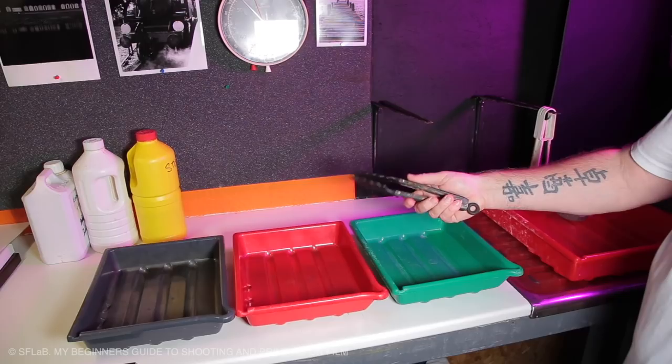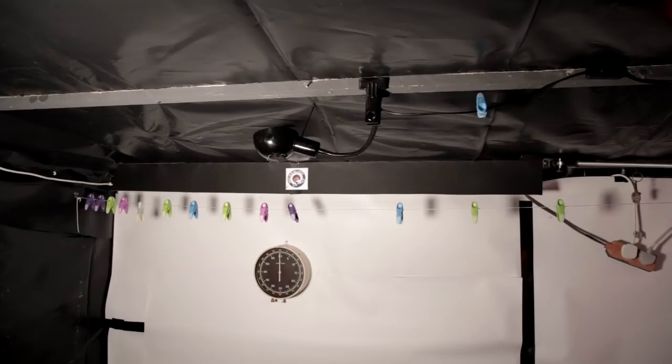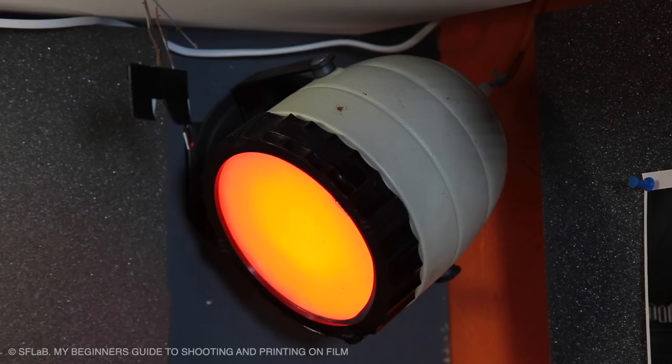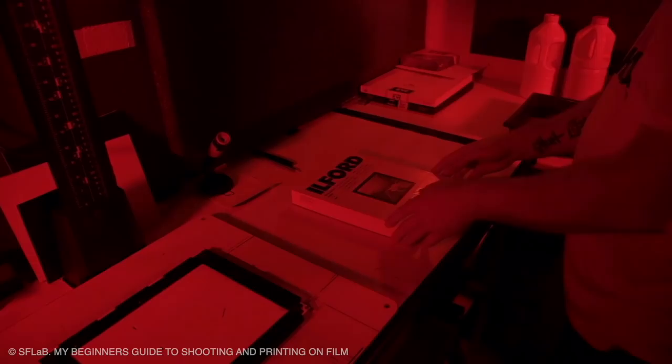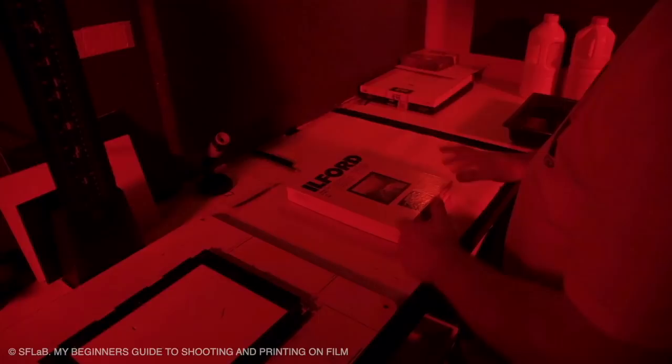You will want some tongs. I use kitchen tongs from the supermarket, they're only a couple of quid each. You'll also need a desk lamp to project light through your film negative onto the paper, and you'll also need a red lamp so you can see what you're doing. These red lamps you can easily buy online or use a red LED strip, but make sure whatever lamp you use doesn't fog the paper.